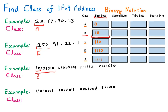For the next IP address, we again focus on the first byte and match it against the table. The first byte starts with 1 1 0, which matches Class C. So this IP belongs to Class C. That is how we can find out the class of IPv4 addresses.